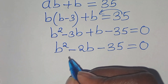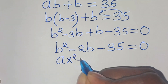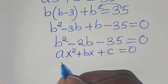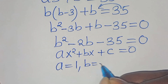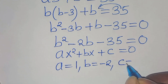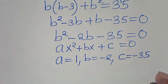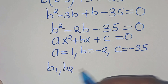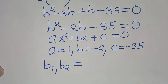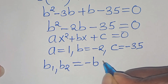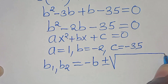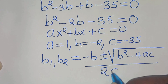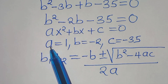This is a quadratic equation of the form ax squared plus bx plus c equals 0. From this quadratic equation, we have that a is equal to 1, b is equal to minus 2, and c is equal to minus 35. To solve for b1 and b2, we can use different formulas, but let's use the quadratic formula: minus b plus or minus the square root of b squared minus 4ac, everything divided by 2 times a.